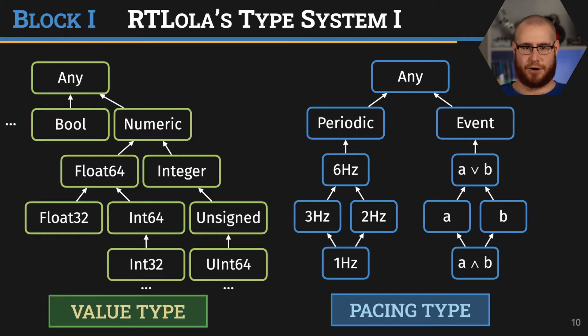The polar opposite of this are event types. They have nothing to do with real time; they are only concerned with new input events. If a stream has the event-based type A or B, for example, where A and B are input streams, then we evaluate the stream when either A or B receives a new value. Similarly, if the event-based type is A and B, we only evaluate the stream if both A and B get a new value at the same point in time. That's the idea behind event types.